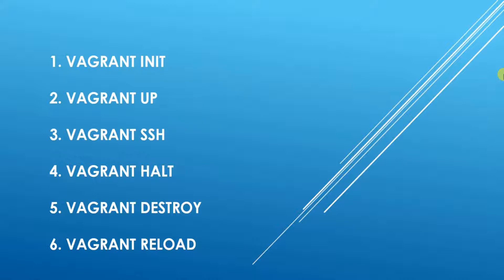The first one is vagrant init. This is used to initialize vagrant in a directory, and what it does is that it's going to create a vagrant file for you in that directory. If you are used to using git, you know when you run git init it creates a directory — however in this case we're going to create a file.